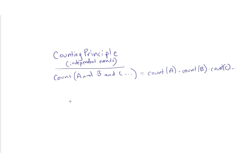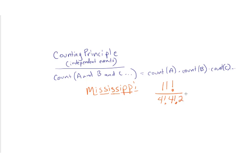How many ways can I arrange the letters in the word Mississippi — M-I-S-S-I-S-S-I-P-P-I? There are 11 letters. Starting with 11 factorial, I divide by 4 factorial for the four S's, 4 factorial for the four I's, and 2 factorial for the two P's. That is your answer — and good luck calculating it!